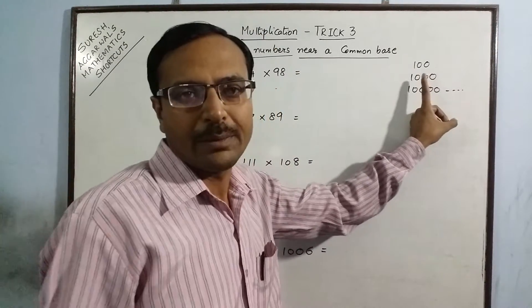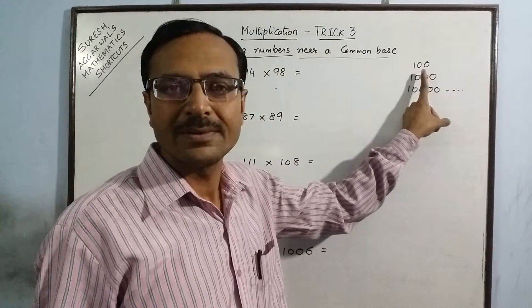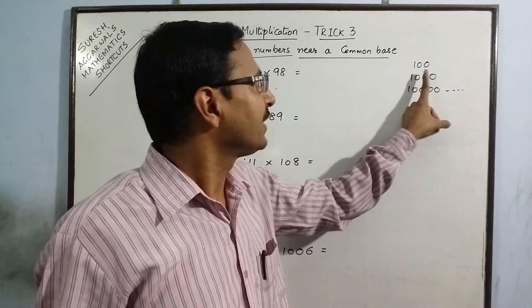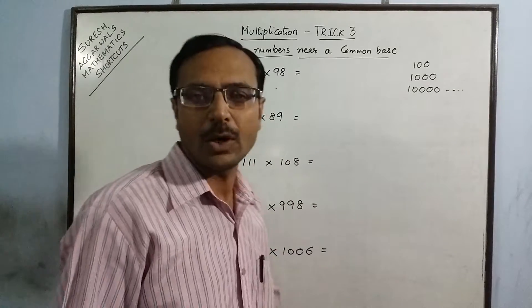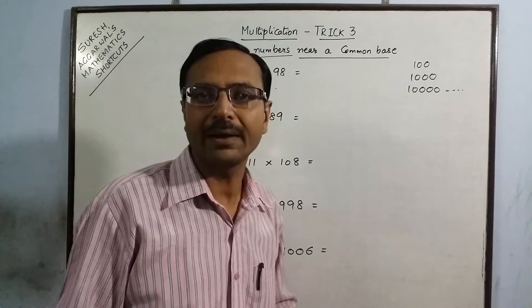As you all know, the base quantities are those numbers which contain zeros, that is 10, 100, 1000, 10,000, and so on.